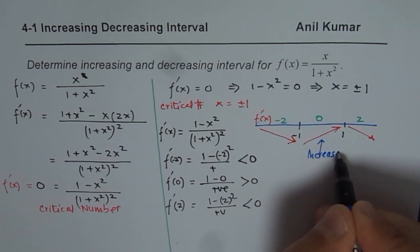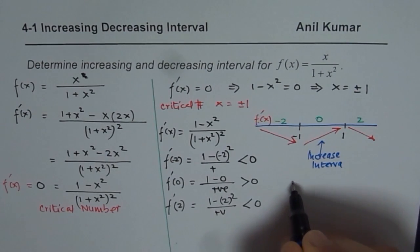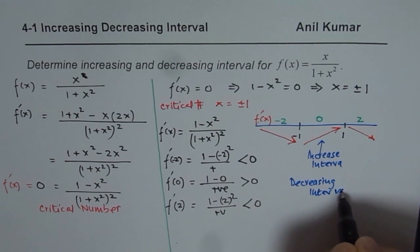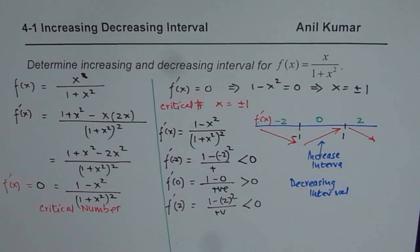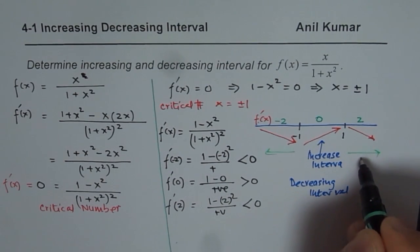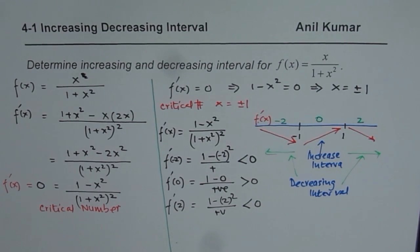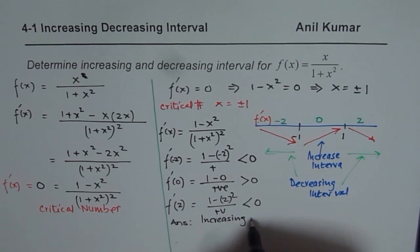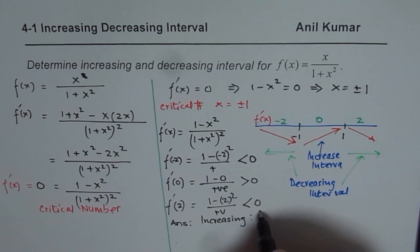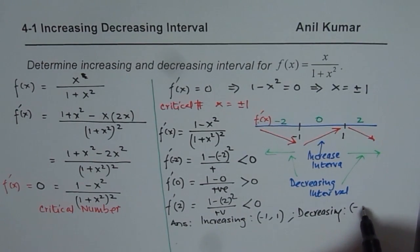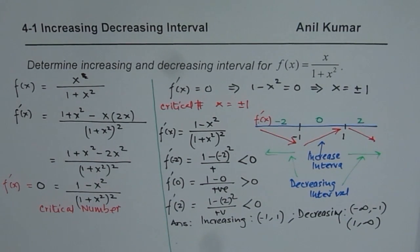So the increasing interval is from −1 to 1, and the decreasing intervals are from −∞ to −1 and from 1 to ∞. That is how you should solve this type of question.